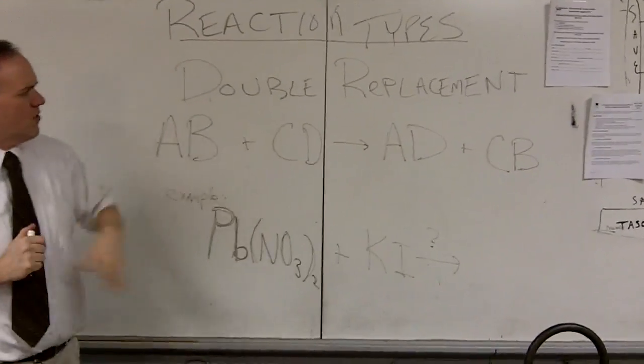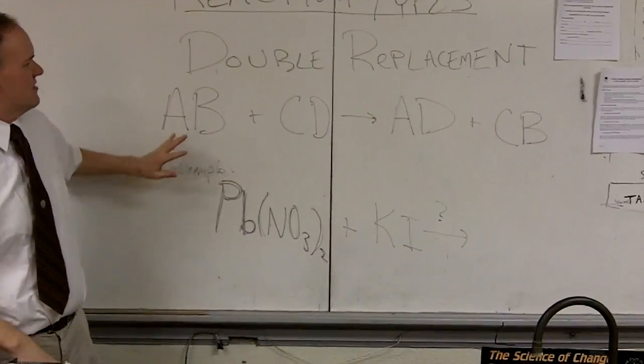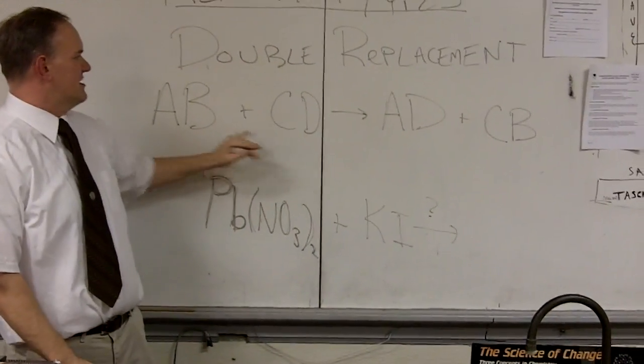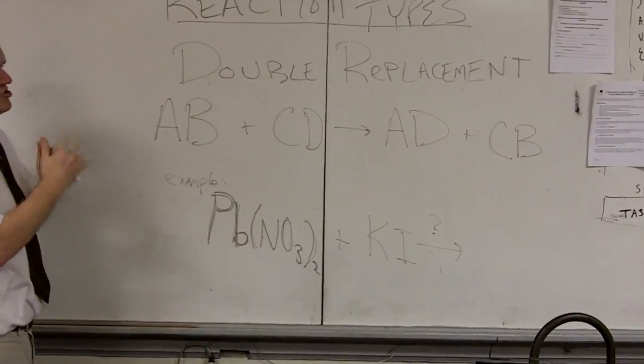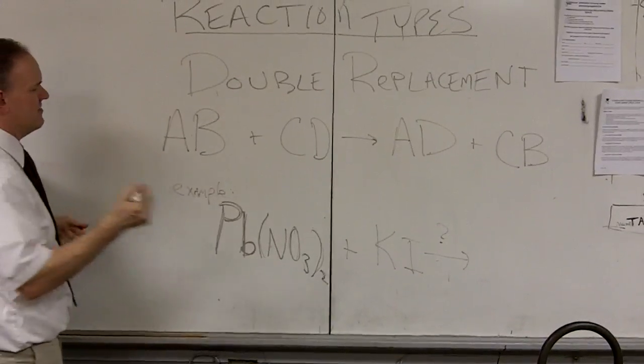And you might wonder, why have I written it that way exactly? Why did I put A, D, but why didn't I just put B, C? Why did I put the C before the B? Well, the reason is because these generally involve ionic compounds.